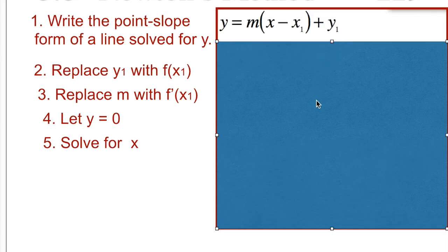It looks like this: y = m(x - x₁) + y₁. Well, the x of the point is our first guess, and f of that would be our y₁.